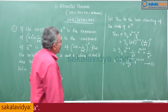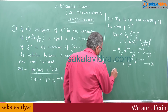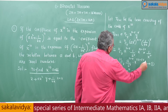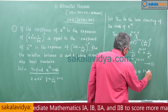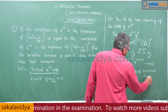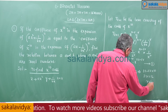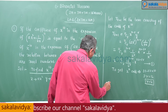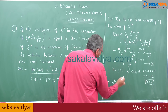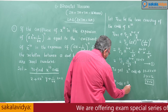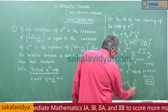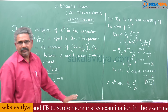To get x^10, we set 22 - 3r = 10, so 3r = 12, giving r = 4. Therefore, the coefficient of x^10 is 11C4 · A^7 / B^4. This completes the first part of the problem.